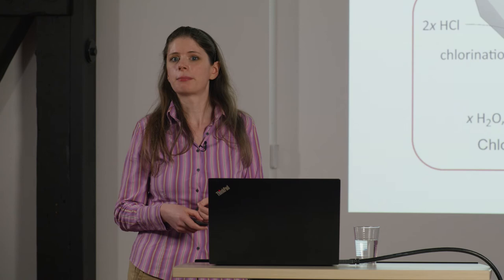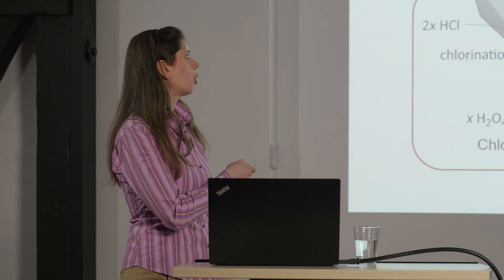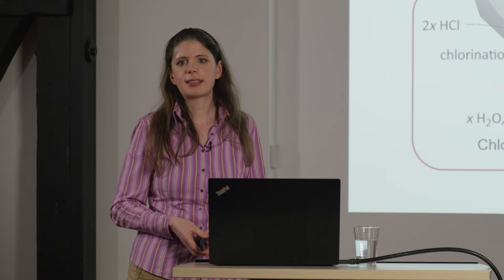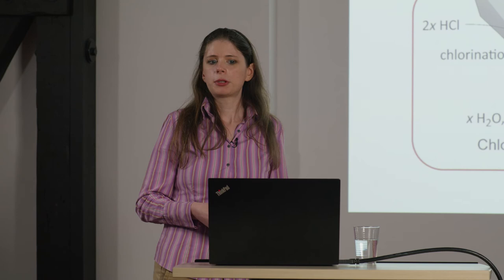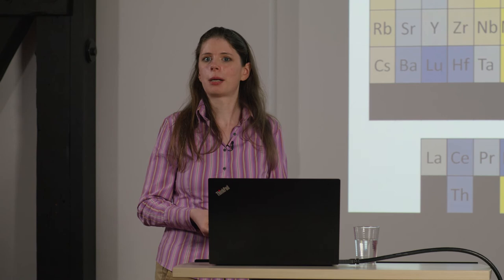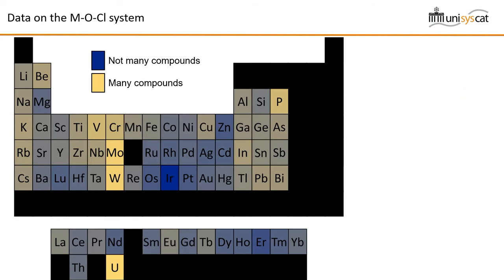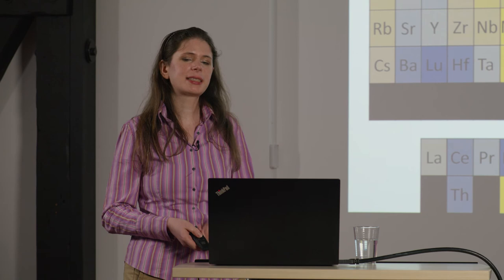We use a so-called descriptor-based method, which means we have some material properties that determine whether or not our catalyst can undergo these two degradation reactions. This is basically just a number, and this number indicates how prone the catalyst is towards one of these degradation mechanisms. The model uses only very fundamental properties of the materials, which means that we can actually apply this model to a large number of different compounds in the periodic table. Here's an overview of the elements whose compounds I have studied in the context of this reaction — I used a lot of elements, which is possible because it's such a simple kind of model.